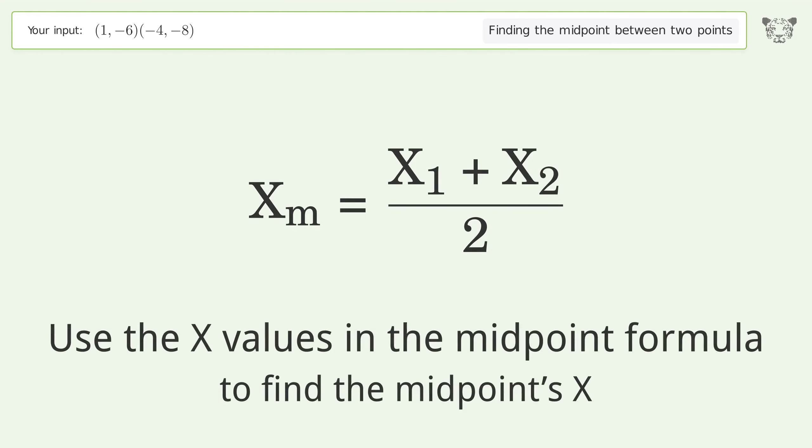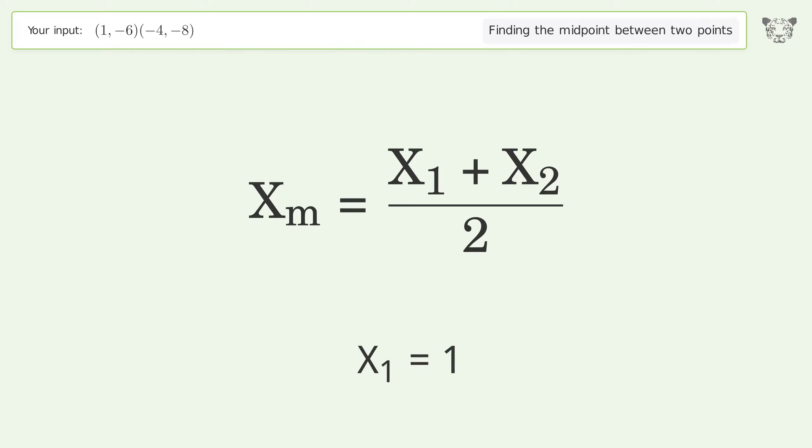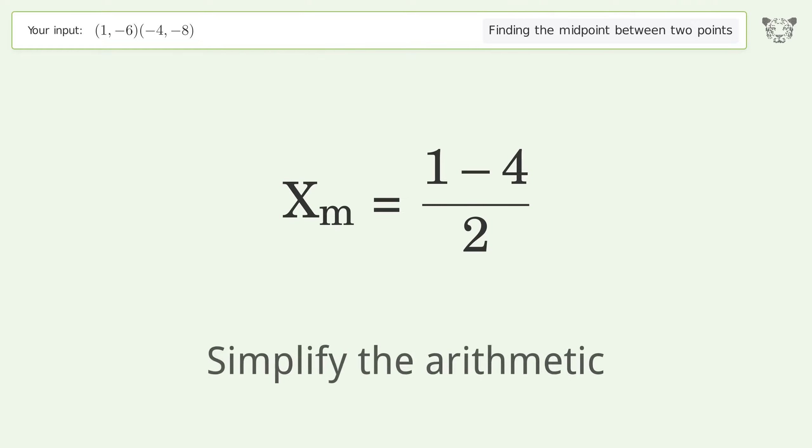Use the x values in the midpoint formula to find the midpoint's x-coordinate. x1 = 1, x2 = -4. Simplify the arithmetic.